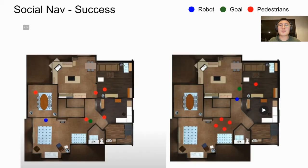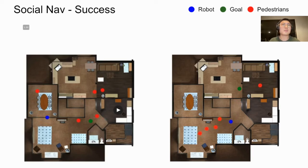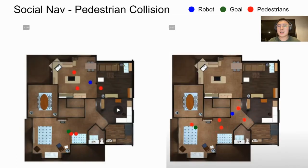Moving on to social navigation, we show two successful episodes where pedestrians are represented by red circles. In the first episode, the agent almost hits a pedestrian but turns left in time to achieve success. In the second episode, the agent is more conservative — moving at very low speed when multiple pedestrians are around, even backing up when necessary — but once the path is clear, it goes straight to the goal. The next two failure cases are due to pedestrian collision: in the first, the agent tries to sneak between a pedestrian and the wall but ends up colliding. In the second, the agent hits a pedestrian while backing up from the wall — a debatable case since its RGBD camera cannot see anything behind it.